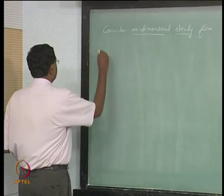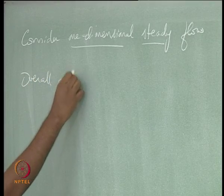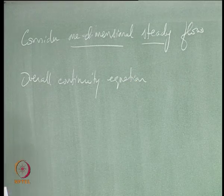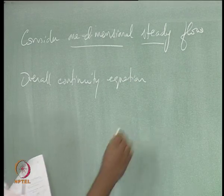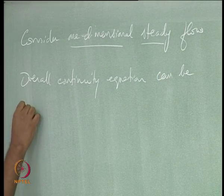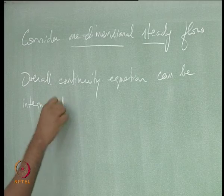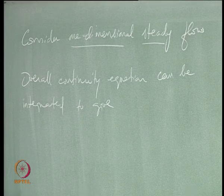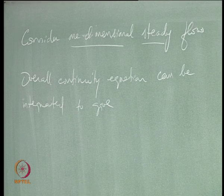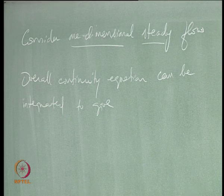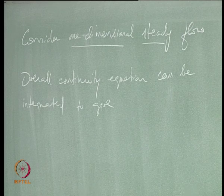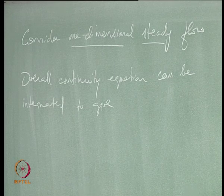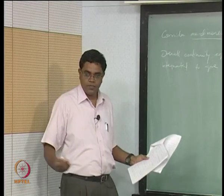The overall continuity equation can be integrated. The overall continuity equation we had was ∂ρ/∂t + ∇·(ρV) = 0. Steady means you do not have a ∂ρ/∂t term; 1D means we have d/dx(ρu) = 0, and if that is equal to 0 we can integrate to get ρu = constant.